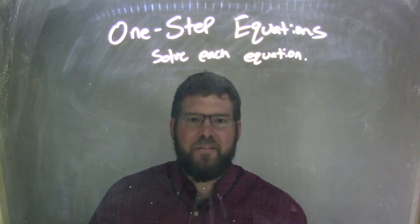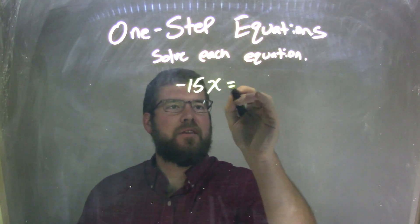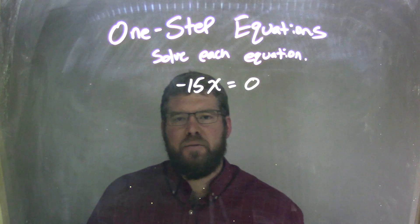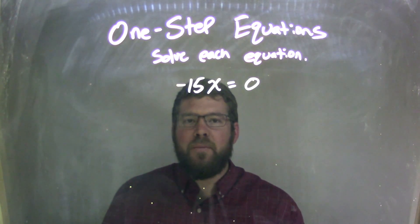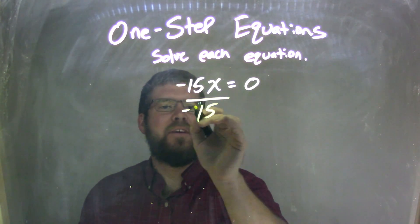If I was given this equation, negative 15x equals 0, I have multiplication there. Negative 15x is just multiplied - it's negative 15 times x. The opposite of multiplication is division, so we divide both sides by negative 15.